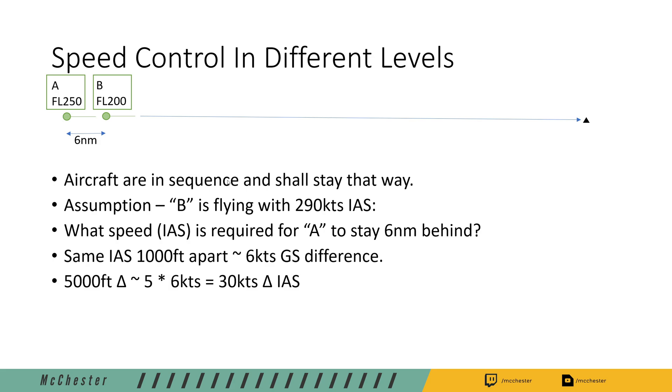To calculate the speed difference in indicated airspeed that we have to assign to the aircraft, we just take the 5,000 feet, that's 5 times 6 knots, which is a speed difference of 30 knots. So in order for those two aircraft to stay six nautical miles apart, the solution is rather easy. We will need to assign aircraft A to fly an indicated airspeed of 260 knots. That's 30 knots lower than the 290 that aircraft B is flying. Keep in mind in the VATSIM environment you will need to instruct aircraft B to keep the speed 290 knots or greater in order to avoid this aircraft reducing speed without your knowledge.